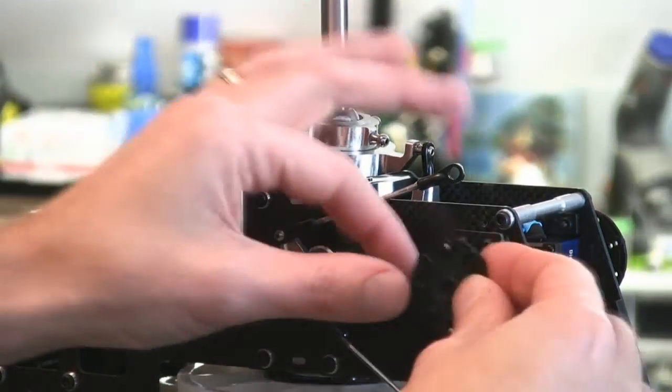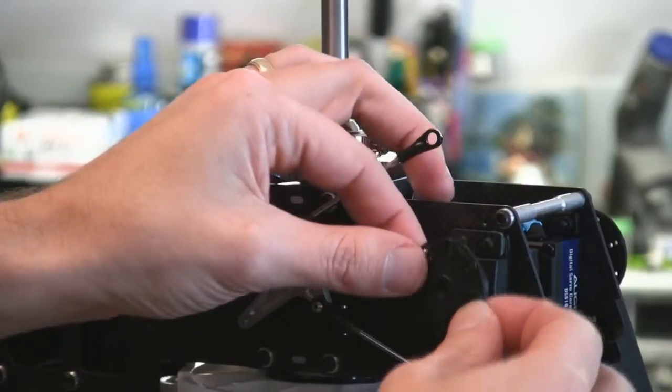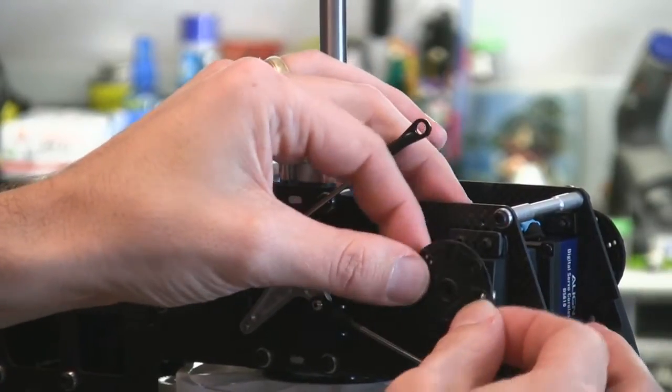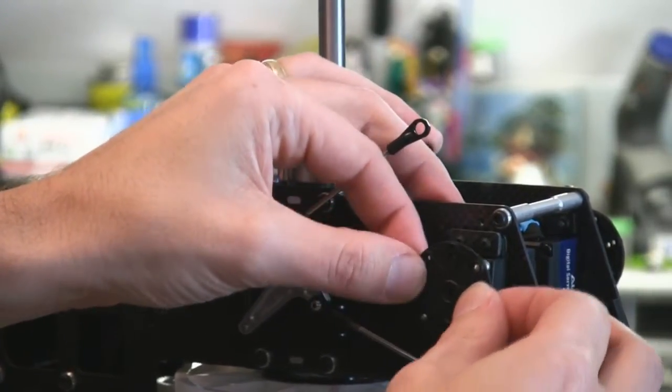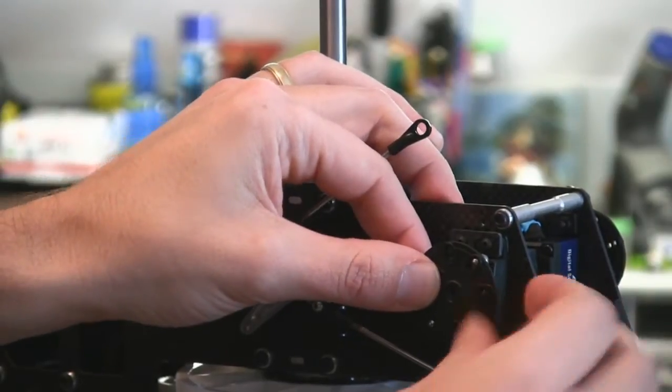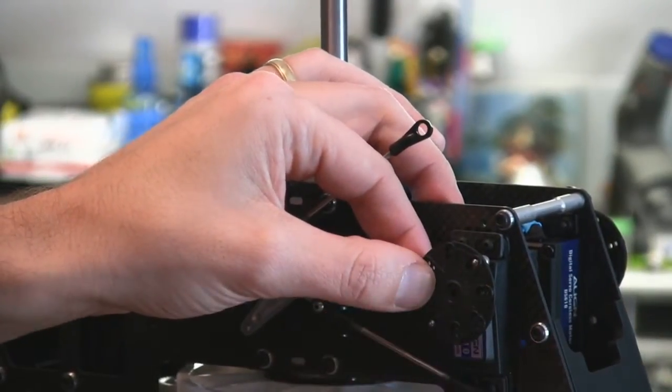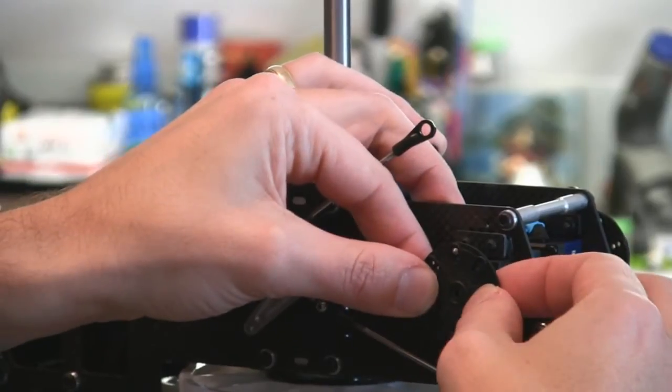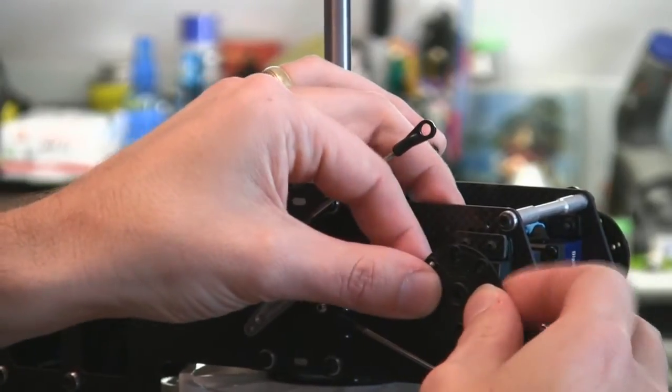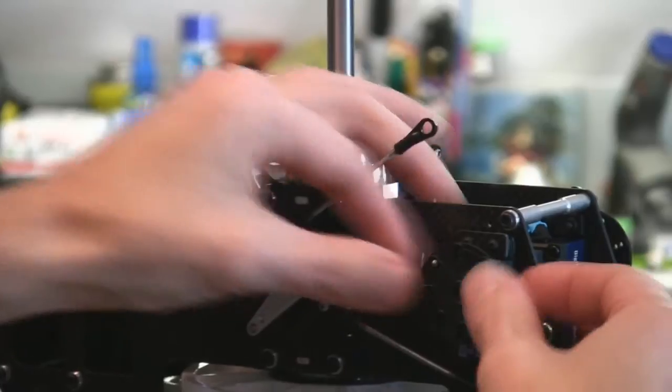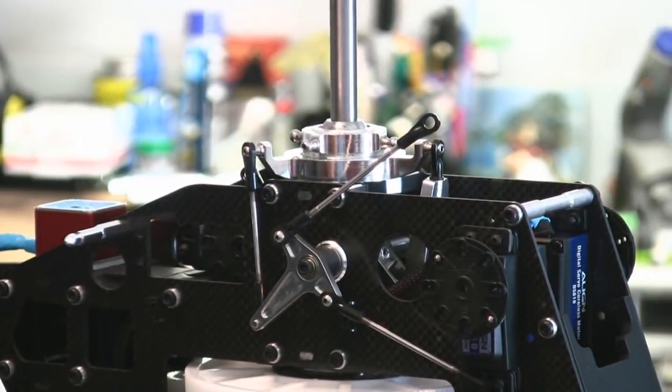Okay I'm going to make sure my throttle stick is at mid-stick. So now what I'm going to do is I'm going to put the servo arm on the servo and I'm going to keep rotating it around until I find a spline location that gives me the ball link locations straight up and down. And I think that's it right there.